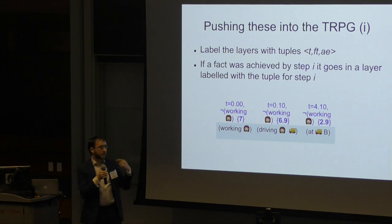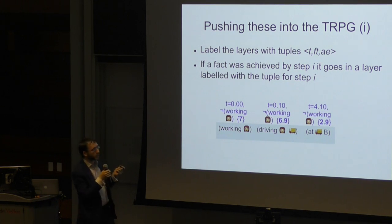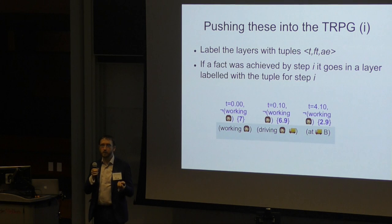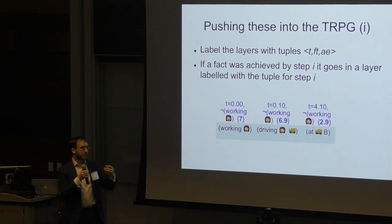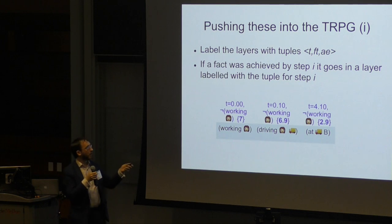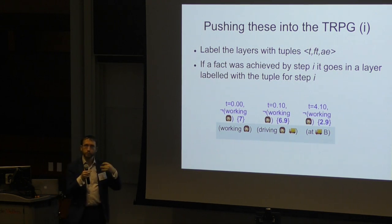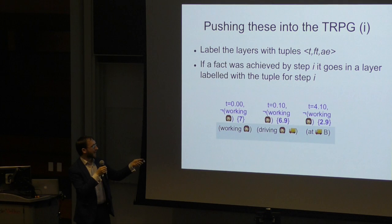So we need to define an ordering relationship. It used to be visited in ascending order of timestamp. We now still visit in ascending order of timestamp. But then we put an arbitrary but consistent ordering on tie-breaking between equal timestamp layers, given what they have in FT and what they have in AE. So it's still an ordered expansion, it's still deterministic. So we can carry on with the same principles that we use for building temporal relaxed planning graphs. If a fact was achieved by a step I in the plan, then we're going to put that fact into a layer in the planning graph which is labeled with the tuple for that step.